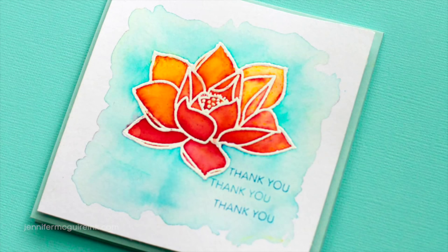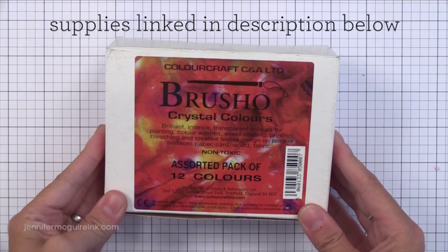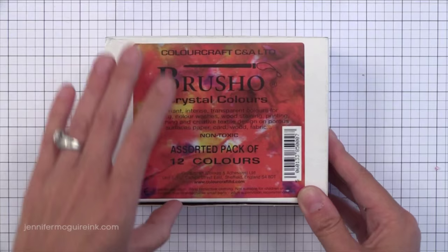So let's talk first about this product. This is the set of 12 Brusho Crystal Colors. These I think are made in England and they're very high quality. You can get packs with more colors in it, but I thought the set of 12 was plenty. It has a lot of basic colors. It has like a light green, a dark green, a light blue, a dark blue, a brown and a black. It's got a good variety in here.